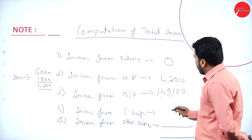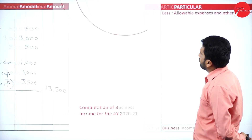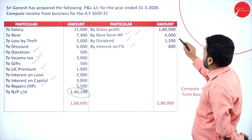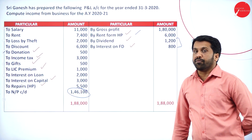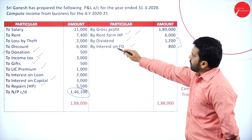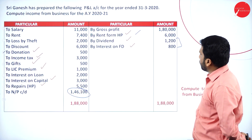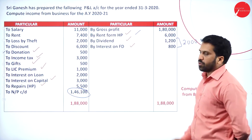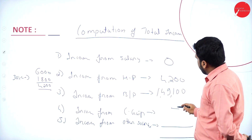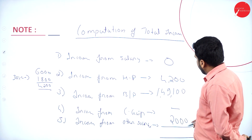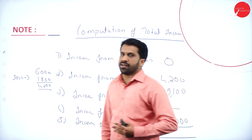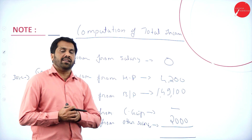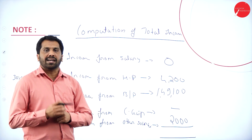Income from capital gain — we check — nil. Dividend and interest on FD come under income from other sources. Both come under other head. Total of other sources: dividend 1,200 plus interest on FD 800 equals 2,000. Capital gain is nil. Remember, dividend received from Indian company is exempted, so we will not calculate tax on that portion.